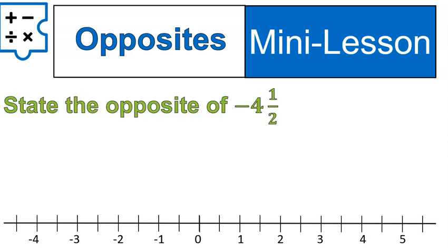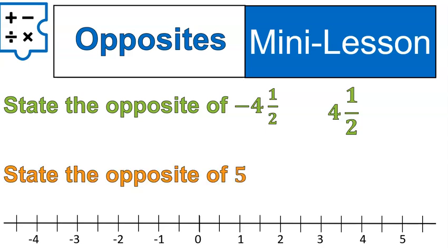Let's practice a little bit. If I ask you to state the opposite of negative four and one half, what would you say? The opposite is just changing the sign, so the opposite of negative four and one half is positive four and a half. What's the opposite of five? Well it starts out positive, so the opposite is negative five. With opposites you just change the sign every time.